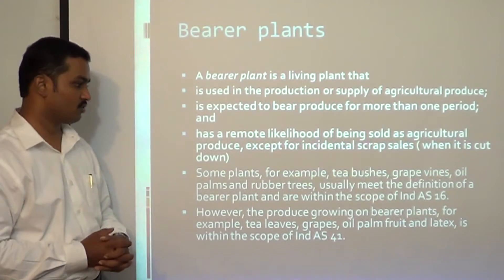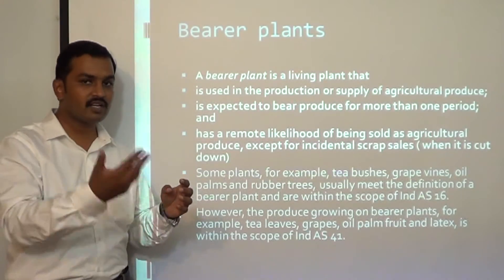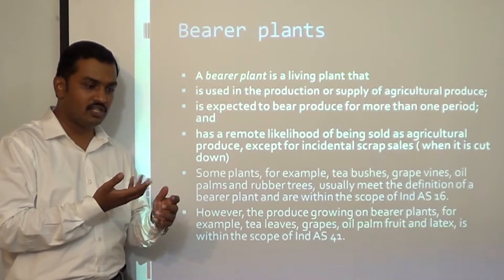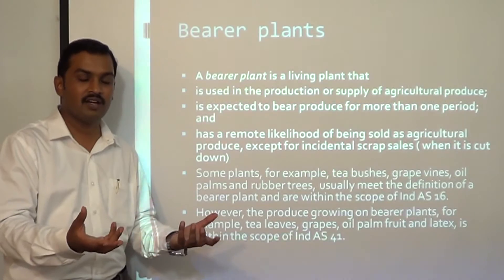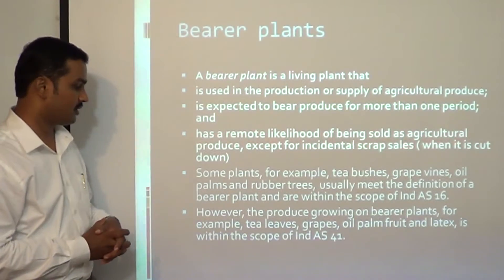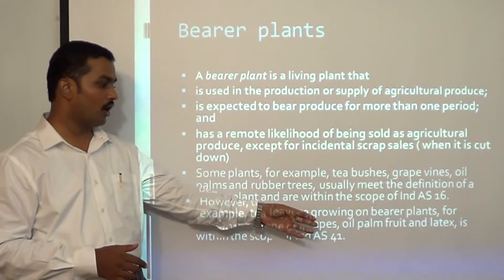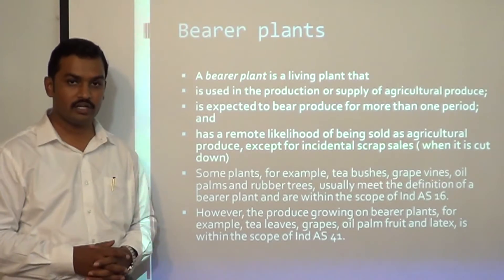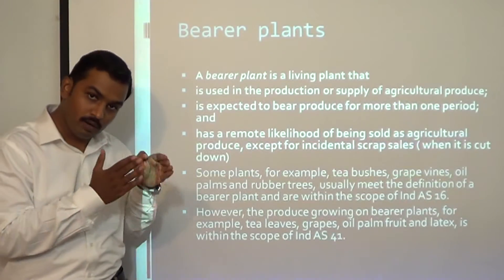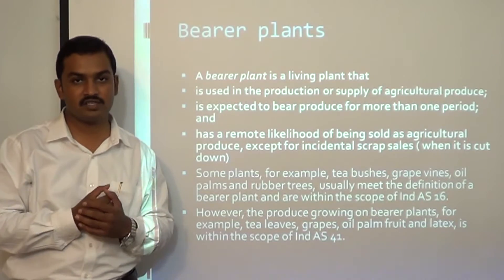Bearer plants are within the scope of IAS 16. For example, rubber plants generate latex for more than one year — we don't cut down the rubber plant each year and sell it as timber or firewood, so it is a bearer plant. However, the produce growing on bearer plants — tea leaves, grapes, oil palm fruit, latex — is within the scope of IAS 41. So the bearer plant itself is not within this standard's scope, but the produce from it definitely is.